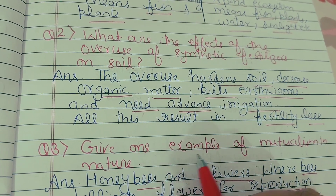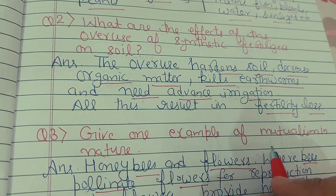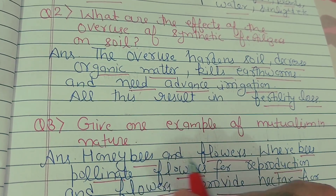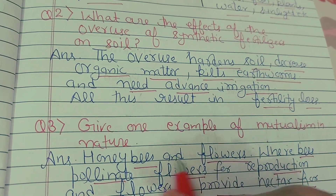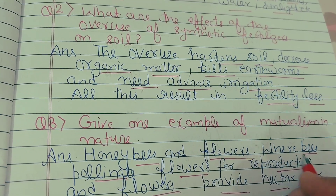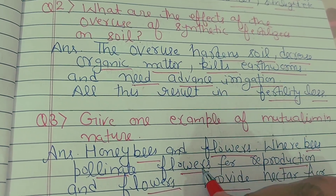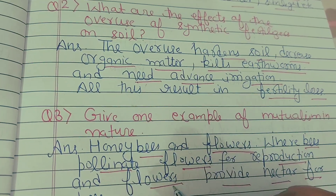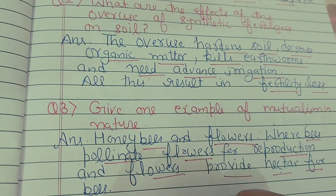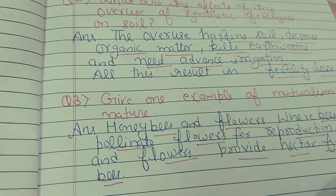Question number three: give one example of mutualism in nature. Mutualism is a positive interaction in nature where both members are benefited. The example is honey bees and flowers: bees pollinate flowers, helping them reproduce, and the flowers in turn provide nectar for the bees. This is a classic example of mutualism.